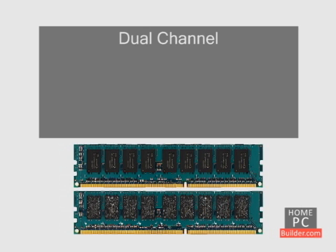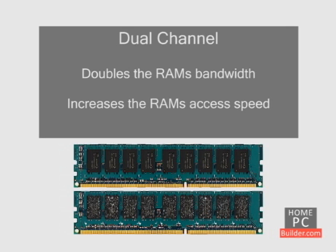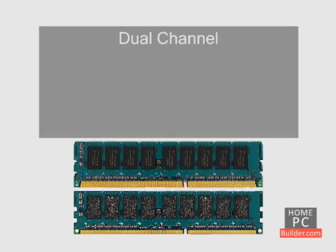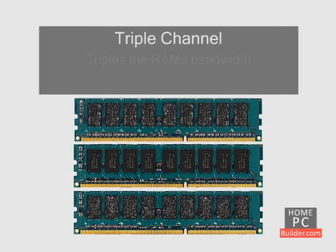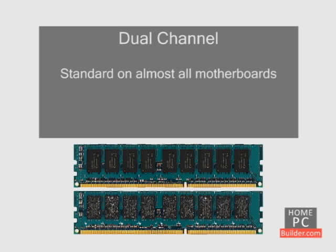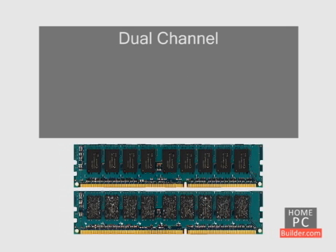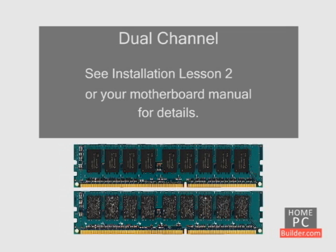The reason for using two sticks of memory is so that you can enable dual-channel on the motherboard. Dual-channel combines the two sticks of memory to double their bandwidth and increase the speed at which the RAM is accessed. Dual-channel support is standard on just about every motherboard made today. The motherboard will detect the matched set of RAM sticks and enable dual-channel automatically.